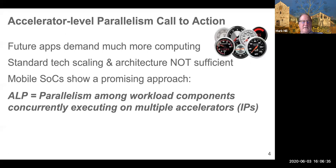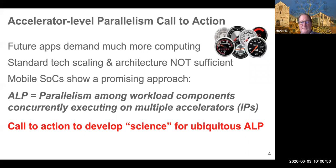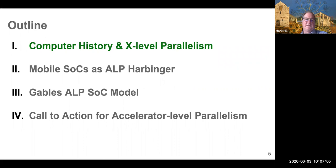Accelerator Level Parallelism is the parallelism among workload components concurrently executing on multiple accelerators, or what's called in the business IP blocks, or intellectual property blocks, which includes CPUs. But I think we had great successes on mobile phones like Android and iPhones, but if we're going to use this more generally for self-driving cars and other places, I believe we need to develop a science, and this is a call to action to do that.